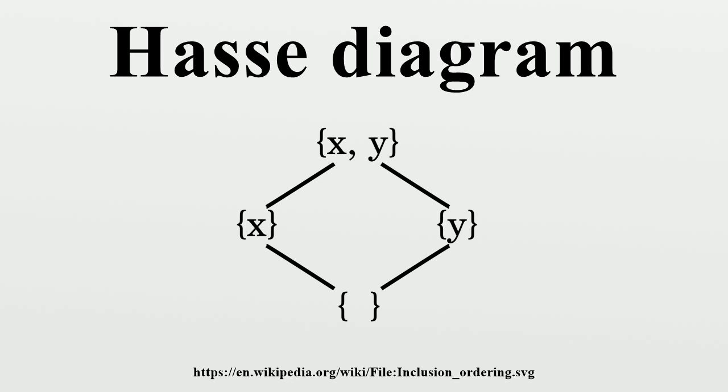A number of results on upward planarity and on crossing-free Hasse diagram construction are known. If the partial order to be drawn is a lattice, then it can be drawn without crossings if and only if it has order dimension at most two.